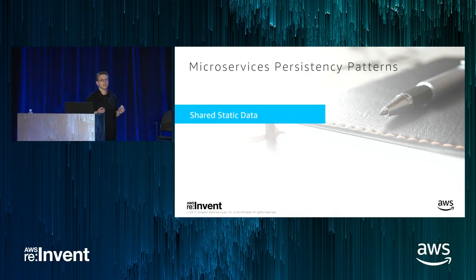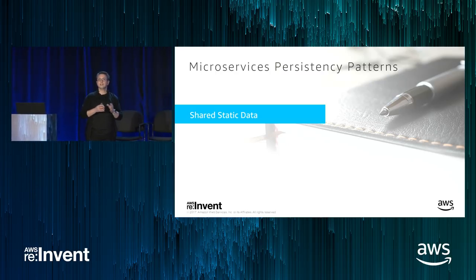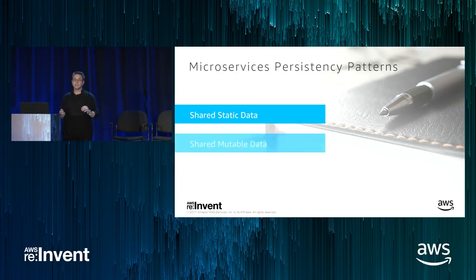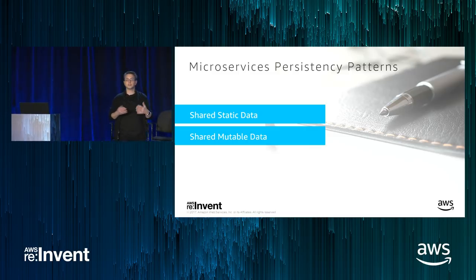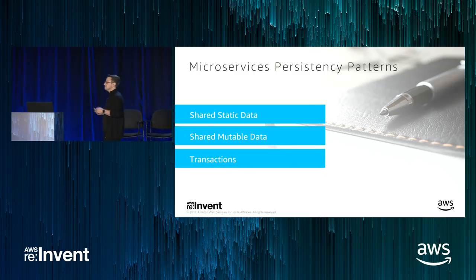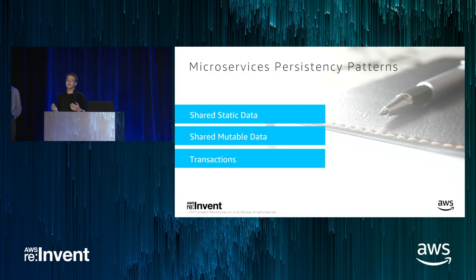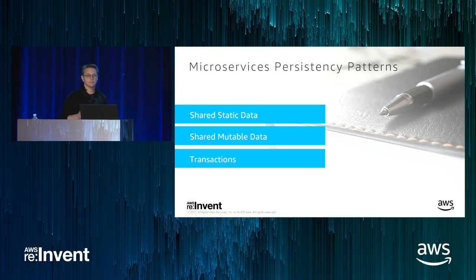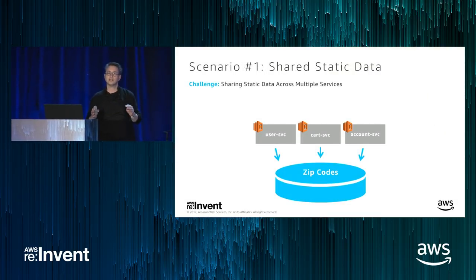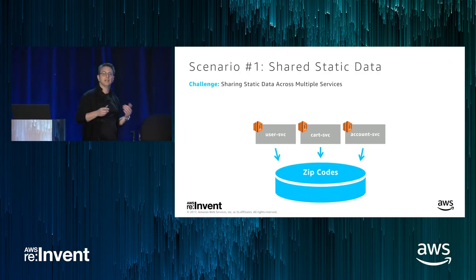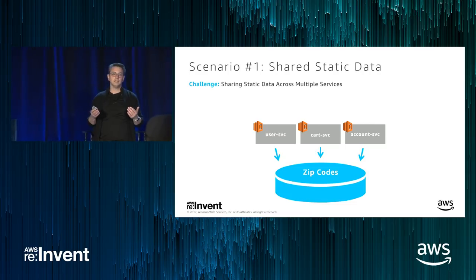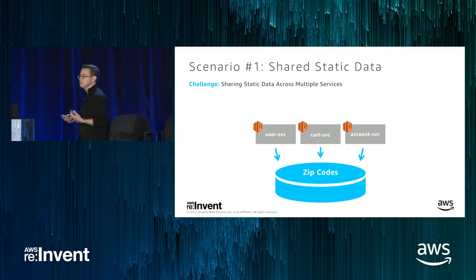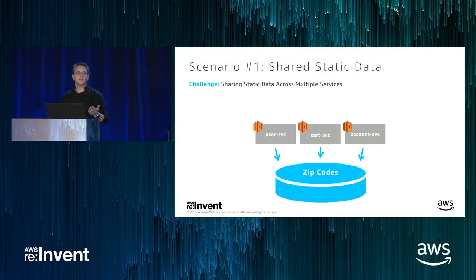The first scenario is shared static data: what do you do when you have data that doesn't change often but needs to be shared across multiple services? In a monolithic world it's easy — all services have access to the same database, the same table. When we tease apart our monolithic database there are a number of approaches. The first is to duplicate the table for each service — simple but effective, though you need to update static data in multiple locations when it changes.